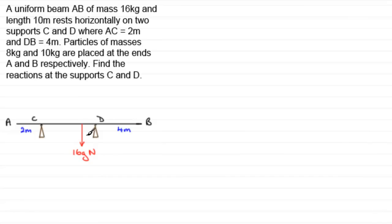Now, as for distances in each of these sections — knowing that from A to the point where the weight acts has got to be 5 meters — that means there's obviously 1 meter in this section here. I'd always fill in all of those spaces with distances.